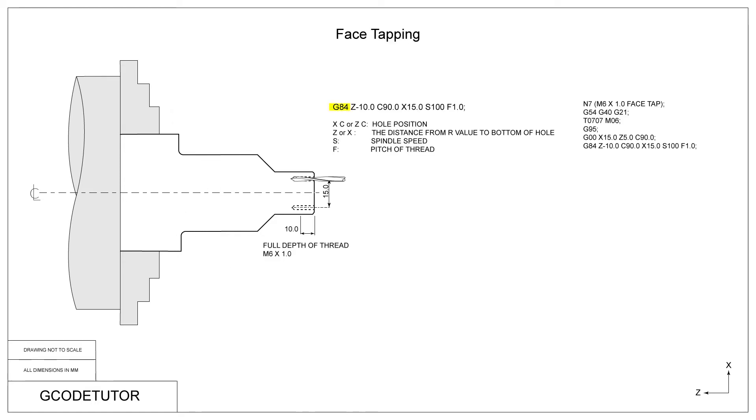I go over each command in each cycle, explaining what each part does. This course comes with nearly 40 different handouts that you can print and store on your phone for reference at your machine.